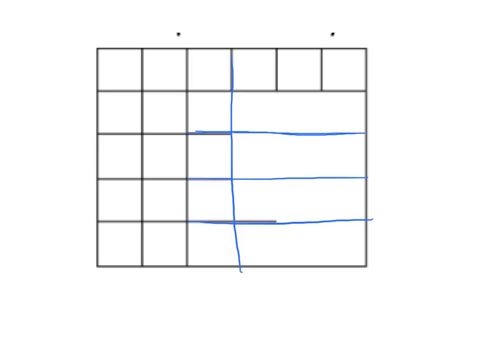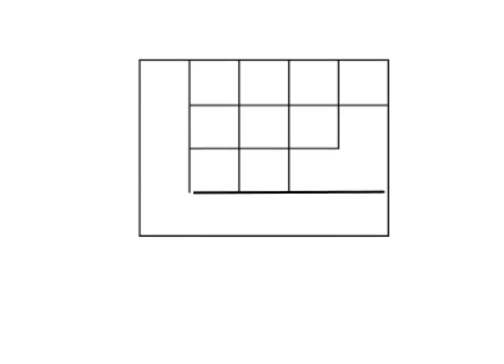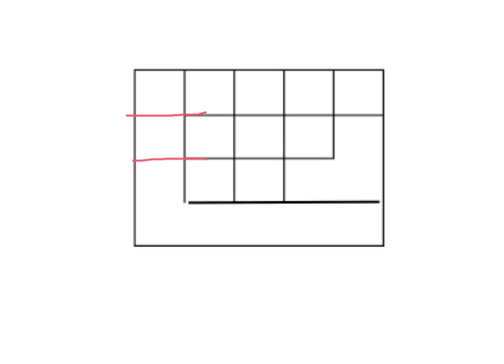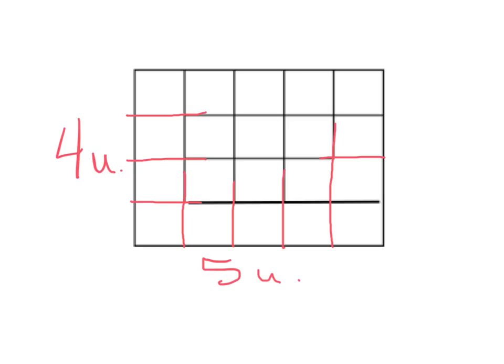So they're going to say, well, these lines would continue, and then these lines would go straight down, and all of a sudden we now have 5 units by 6 units. Or with this one, they'd say, let's continue the lines — we can continue this one, and this one, and this one, and then continue here, here, and here — and all of a sudden we get 4 units and 5 units. I left off the labels, and the labels are super important.